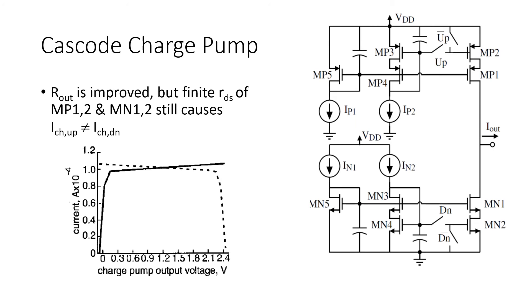So a straightforward improvement would be to use current sources with enhanced output impedance. And here's an example of a circuit like that. You see that the pull-up and pull-down currents are cascode current sources. Here's the cascode biasing for the PMOS transistors and the cascode biasing for the NMOS transistors.